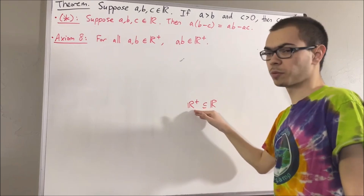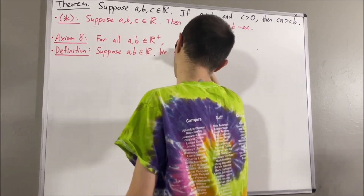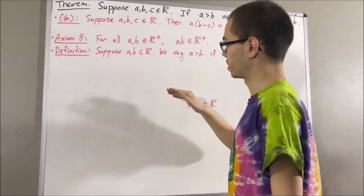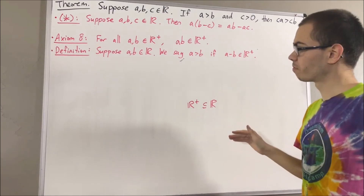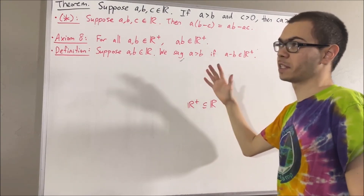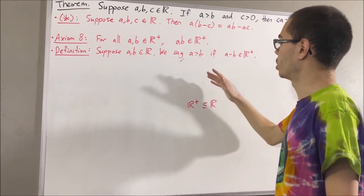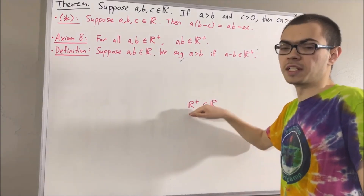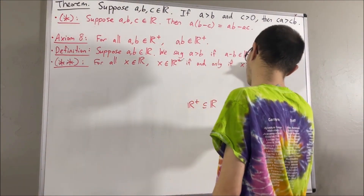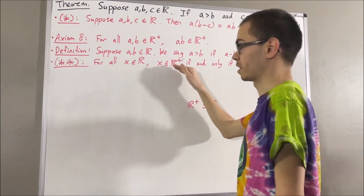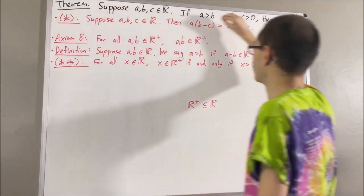Also, using the set of positive real numbers, our definition of greater than is as follows. Suppose A and B are real numbers. We say A is greater than B if A minus B is a positive real number. And one of the obvious facts that we proved using this definition of greater than is: to say a real number is an element of the positive real numbers is equivalent to being greater than 0. So, for all real numbers X, X is a positive real number if and only if X is greater than 0. Okay, so now let's get into proving this theorem.